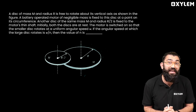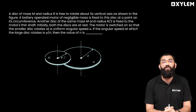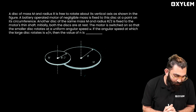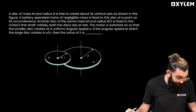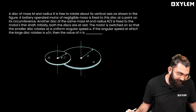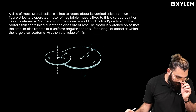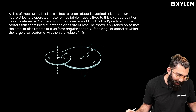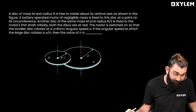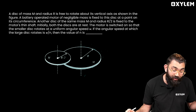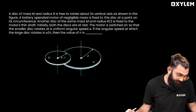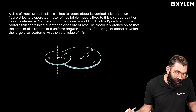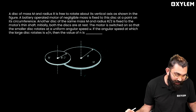Welcome back to JEE Advanced custom paper discussion 2024. This is question number nine. A disc of mass M and radius R is rotated about its vertical axis as shown in the figure. A battery-operated motor of negligible mass is fixed to this disc at a point on the circumference. Another disc of mass m and radius R/2 is fixed on the motor's thin shaft.